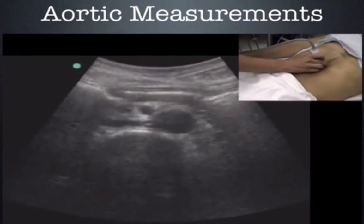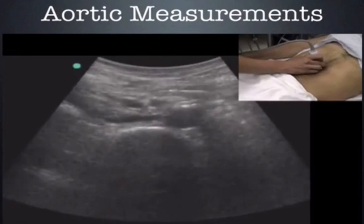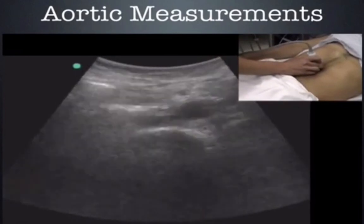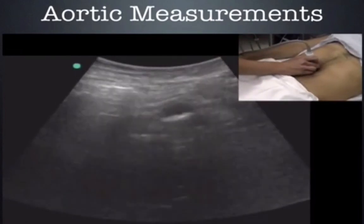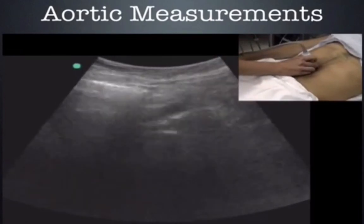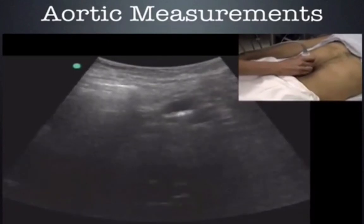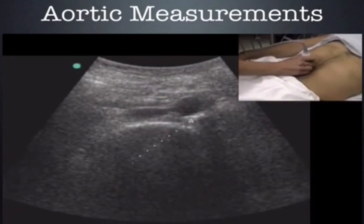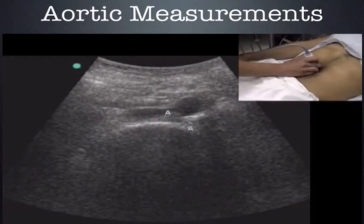Then, we're going to go down to the bifurcation and then come back up another one to two centimeters. There's the bifurcation. So let's come back up and freeze the image and measure outer wall to outer wall.